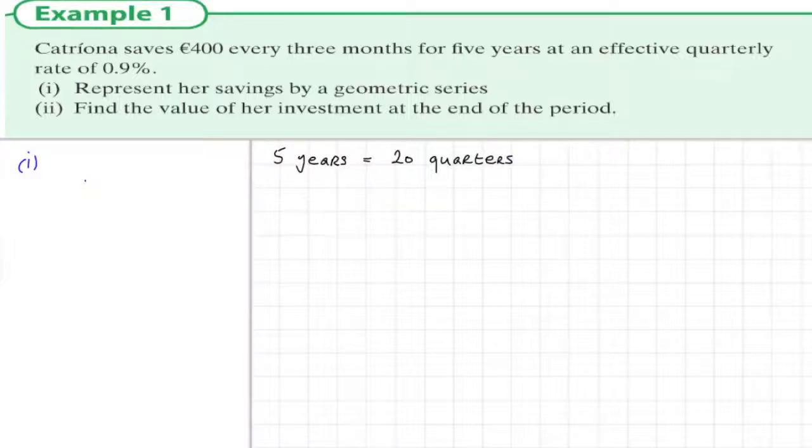We have the formula that the future value is the present value times one plus i to the power of t. In this question we also know that i is 0.9%, therefore one plus i is 1.009.